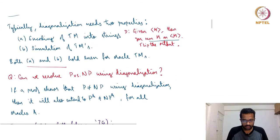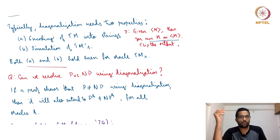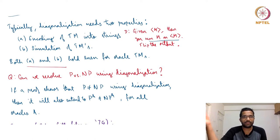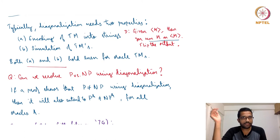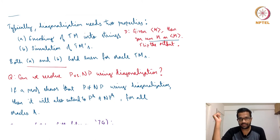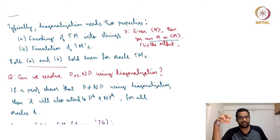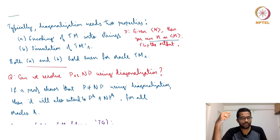Let us try to understand the consequences. One may wonder — because we saw time hierarchy, space hierarchy, undecidability, which seem to be big problems solved in computability theory — can one possibly solve P versus NP using diagonalization? Can we use some diagonalization technique, very smart and very creative, to show that P equals NP or P does not equal NP?